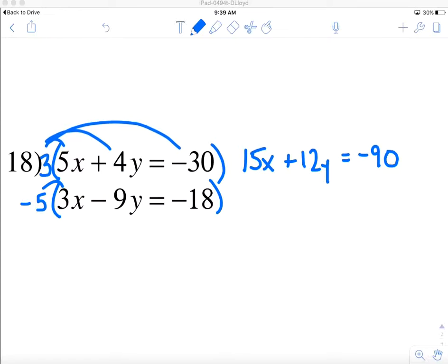Now on the bottom, I'm going to have negative 5 times 3x, so I have negative 15x, and there's my opposite pair which I like. That means I know I'm doing it correctly. I have negative 5 times negative 9y, that's positive 45y, and I have negative 5 times negative 18.